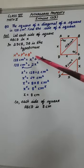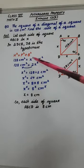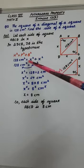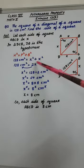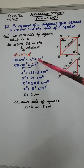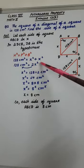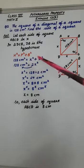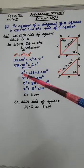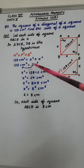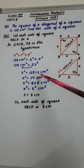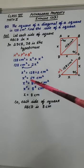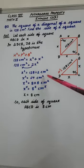Now X square plus X square. No number is here in front of X, that means here 1, here 1. And 1 plus 1 it will be 2, so 2X square. Now on transposing to this side, value of X square will be 128 divided by 2. And on division, answer is 64 cm square.